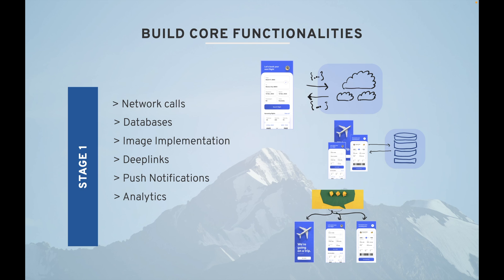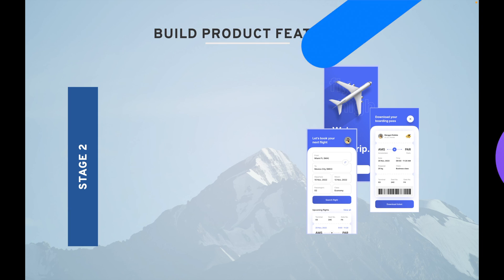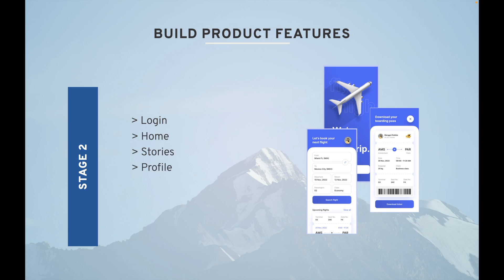Stage two is building product features — for example, login, home, stories, profile, payments, and booking. You can see an example of an airline booking app here. There are many features that can be included in stage two of development.